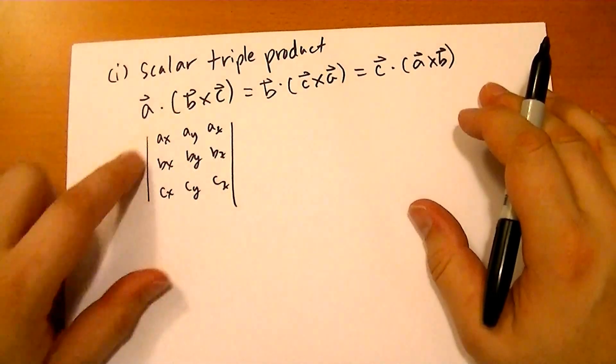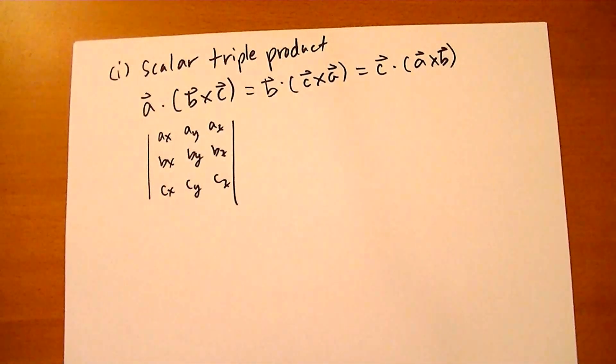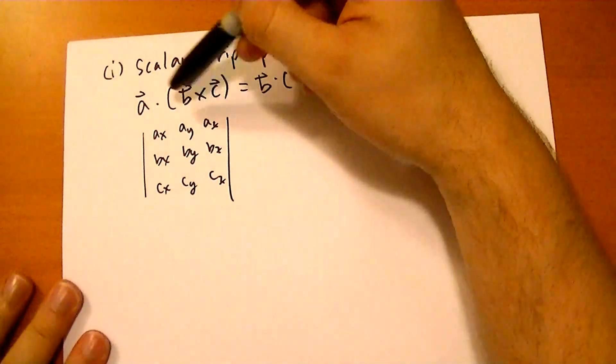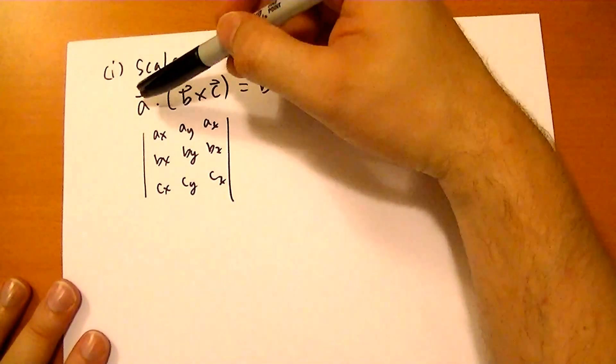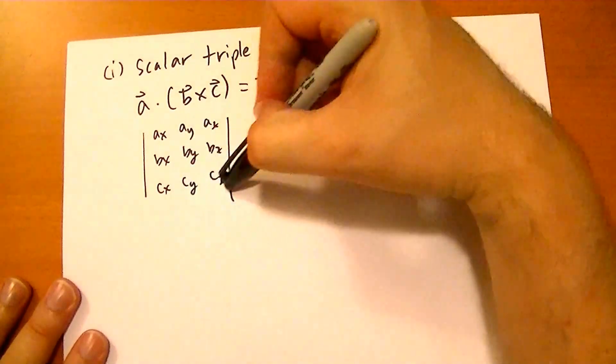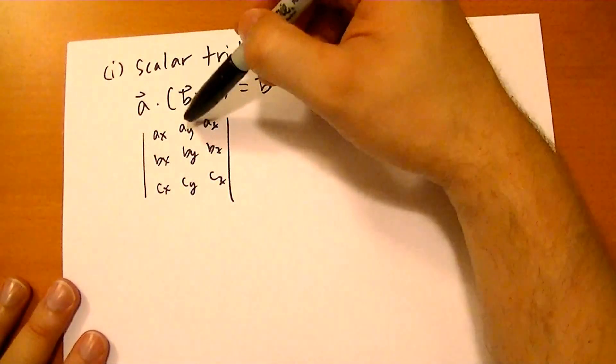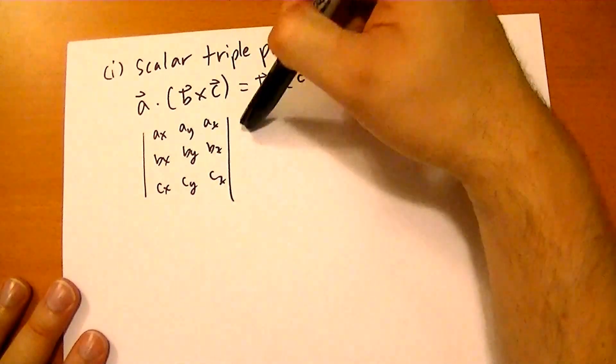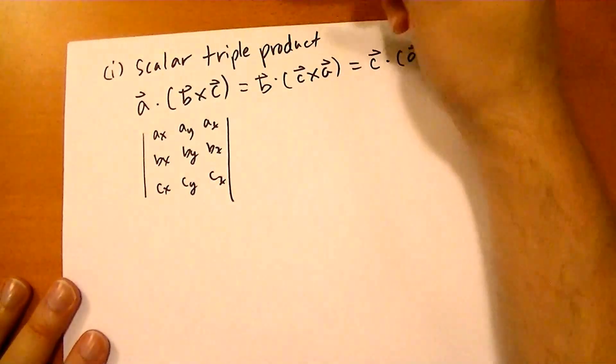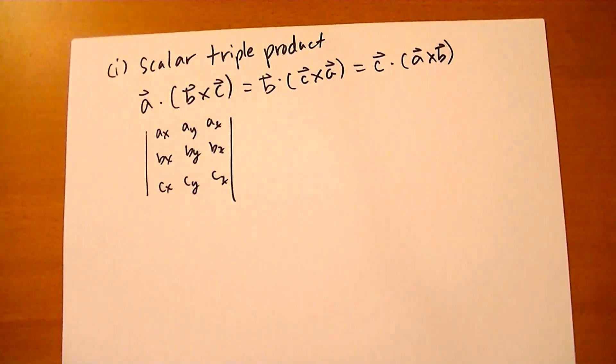Why does this work? Well, the cross product is i, j, k with bx, by, bz and cx, cy, cz. And you're going to take whatever that is, dotted with the A vector. What's going to happen is the coefficients of the i hat term will be multiplied by ax, the coefficients of the j term will be multiplied by ay, and the coefficients of the z term will be multiplied by az. So it works out.